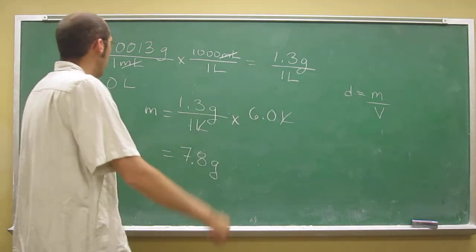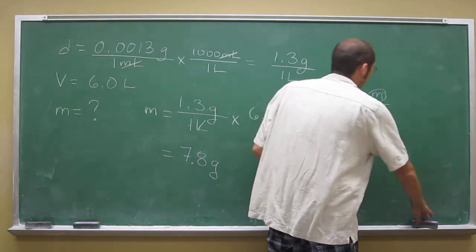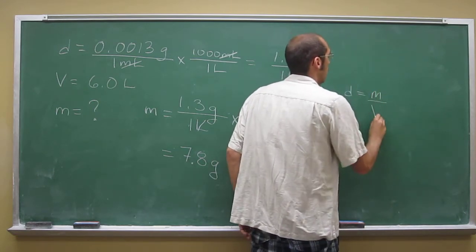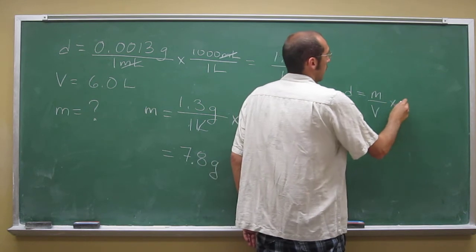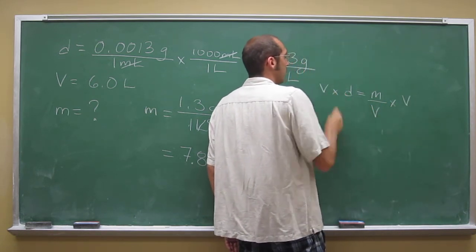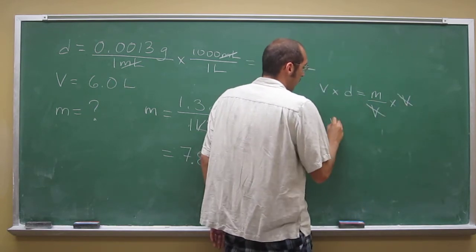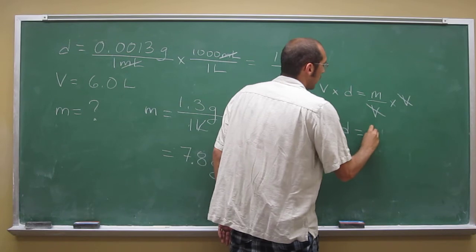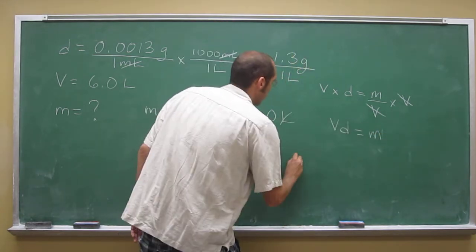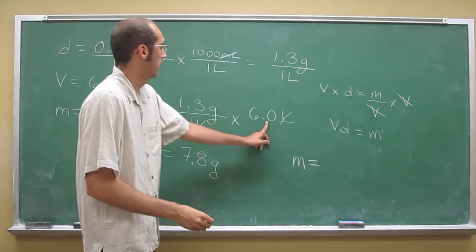We can manipulate that formula, remember. So we're looking for mass. So we want to isolate that variable, right? So how do we do that? We've got to multiply that side by V, and if we do that, we've got to multiply that side by V. So cancel, cancel. So we've got V equals M, right? So do we do that?